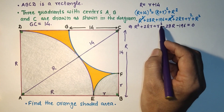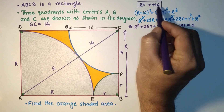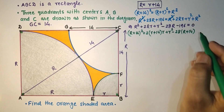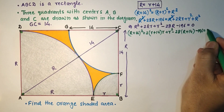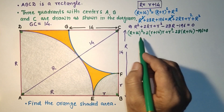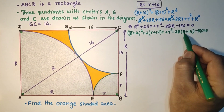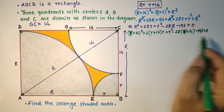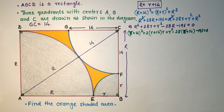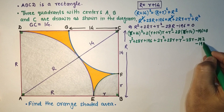Substituting capital R as r + 14: after substituting R = r + 14, and simplifying, we get r² + 196 + 28r plus additional terms minus 392 minus 196 equal to 0.